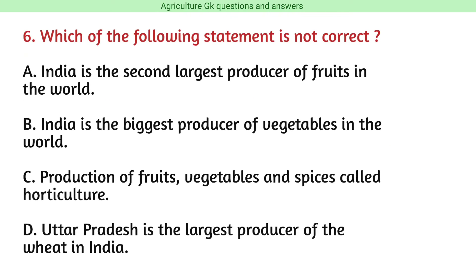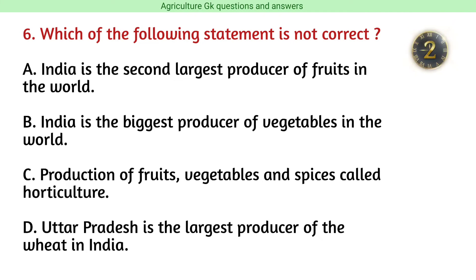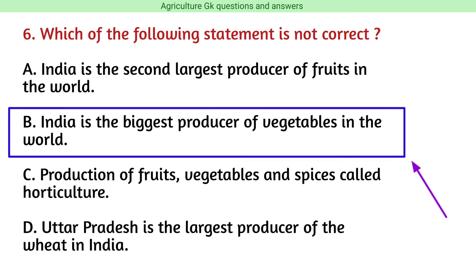Question number 6. Which of the following statements is not correct? The correct answer is option B, i.e., India is the biggest producer of vegetables in the world.